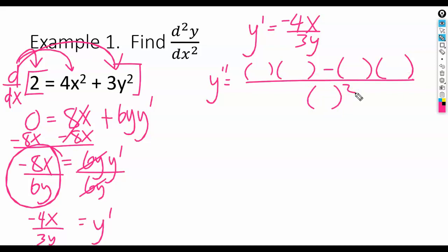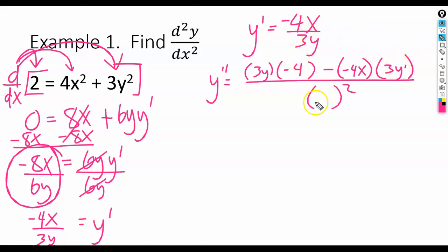Let's put those in. Low is 3y. d-high is negative 4. High is negative 4x. d-low will be 3y' — the derivative of 3y is just 3, but since it's a y, we put a y'. And then, of course, we square the bottom.